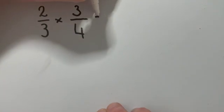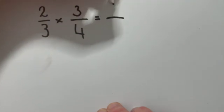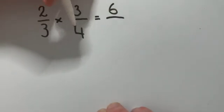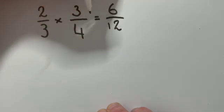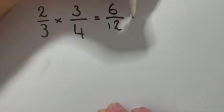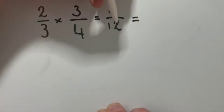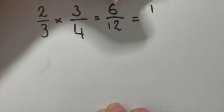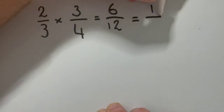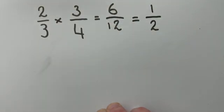So as long as you know your tables, you're all good. So 2 times 3 would be 6 and 3 times 4 would be 12. We can now simplify that fraction, which we've learned in a previous video. So both of these numbers will divide by 6. So 6 divided by 6 is 1, 12 divided by 6 is 2. So our answer is 1 half.